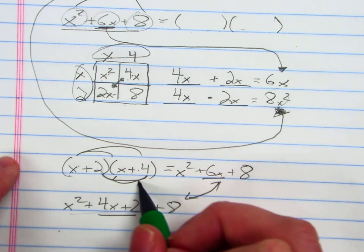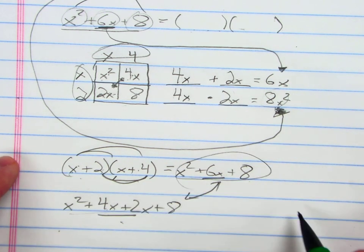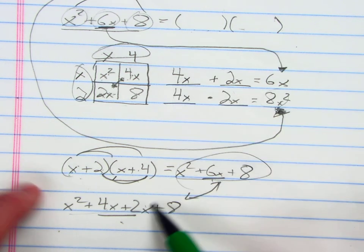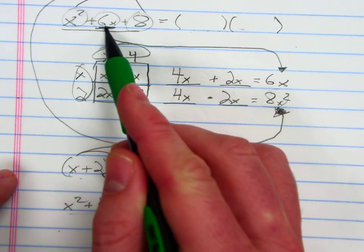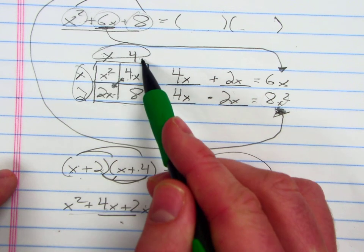I can easily see that my polynomial that I got when I multiplied my factors is the same as the polynomial we wanted. So I have checked my work and I know that I've correctly factored x squared plus 6x plus 8 into x plus 4 times x plus 2.